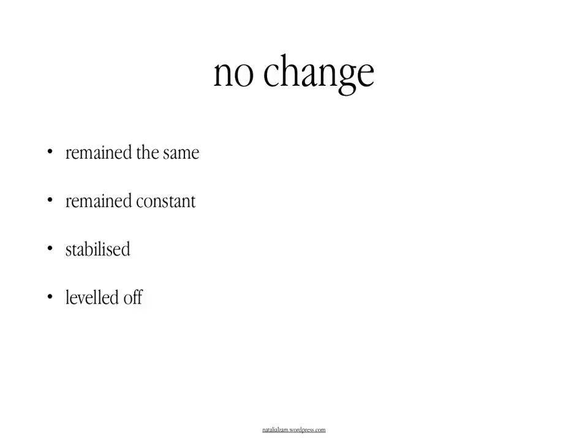Finally, your charts may indicate there has been no change whatsoever, or roughly no changes. So you could say that the figure has 'remained the same' or has 'remained constant.' You could say that the figure has 'stabilized' or it has 'leveled off.' As you can see, there are plenty of ways to describe graphs and data charts, so try to use different vocabulary to show your range.